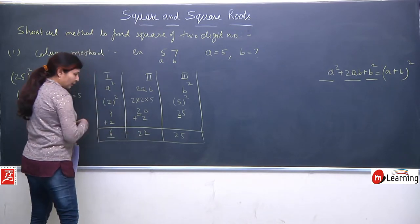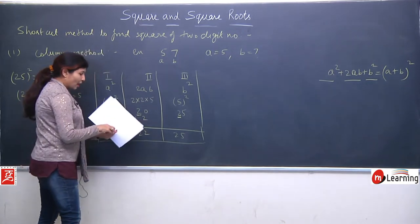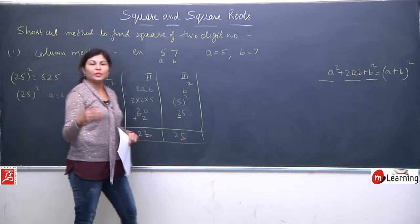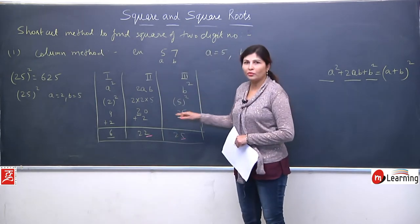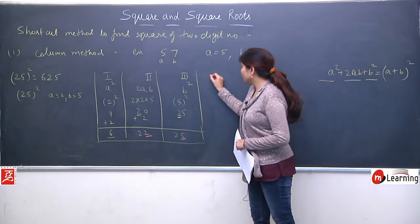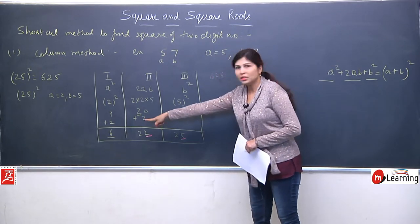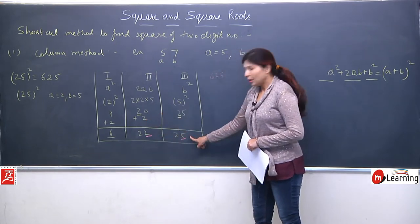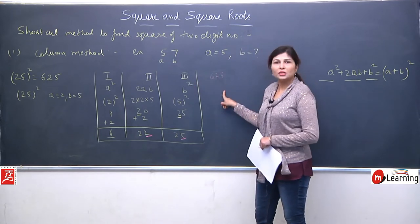This becomes our final middle column value. Then the carry from the middle column (the tens digit of 22, which is 2) is added to the a² column: 4 + 2 = 6. For the answer, we take the full left column (6), unit place of middle column (2), and unit place of right column (5). So 25² = 625. Verified!